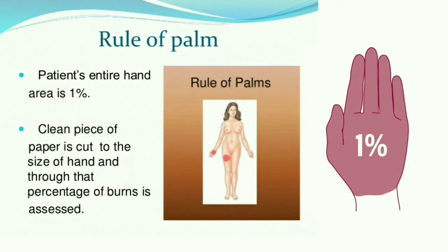Another way to measure the percentage of small or patchy burns is using the palm method. You use a clean piece of paper the size of the patient's whole hand — that's the digits and the palm — which represents 1% of total body surface area. Match this to the area that is burned. This method is also called the rule of palm.